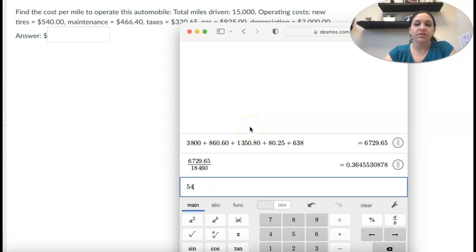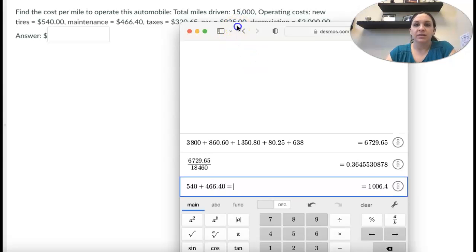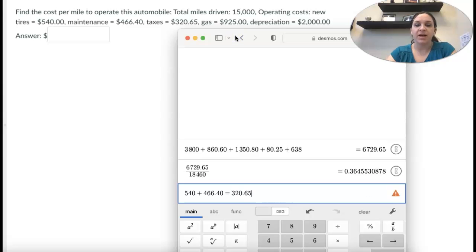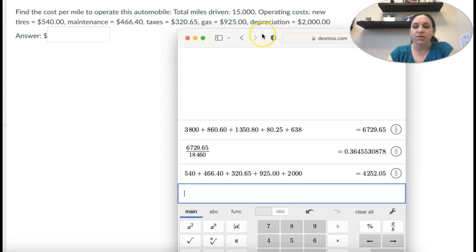So new tires $540.00, maintenance $466.40, taxes, gas $925.00, depreciation $2,000.